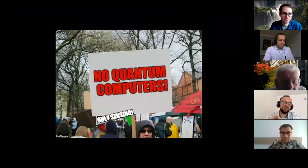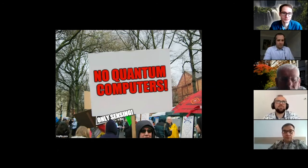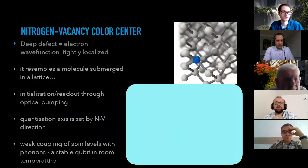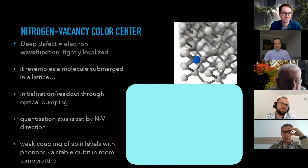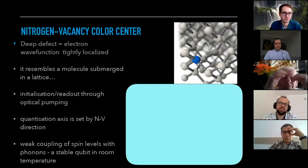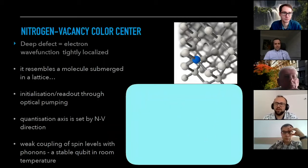I won't talk about quantum computers but will focus on quantum sensing as it's called, about the nitrogen vacancy center. We are talking about diamond — mostly carbon — with a defect which is nitrogen vacancy, meaning one of the carbon atoms is substituted by nitrogen and the next neighbor is a vacancy.